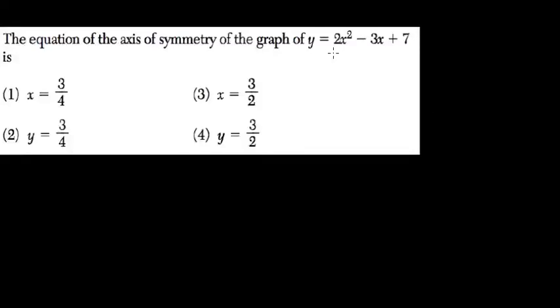What is the equation for the axis of symmetry here? Well, the axis of symmetry equals negative b over 2a.